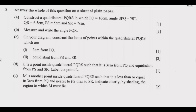Number 2: equidistant from PS and SR. Then L is a point inside quadrilateral PQRS such that it is 3 centimeters from PQ and equidistant from PS and SR — label the point L. Question E: M is another point inside quadrilateral PQRS such that it is less than or equal to 3 centimeters from PQ and nearer to PS than to SR — indicate clearly by shading the region in which M must lie.